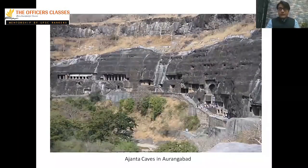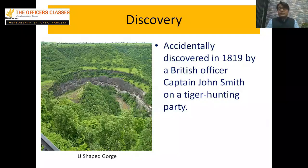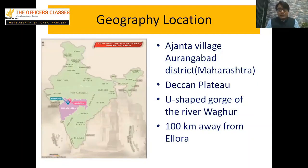This is a picture of Ajanta caves where these paintings were drawn. The caves were discovered in 1819 — a British officer, Captain John Smith, found them during his tiger hunting party. Before 1819 they were not widely known. In geography, Ajanta village is located in Aurangabad district in Maharashtra, and the U-shaped gorge is formed by the Vaghur river.